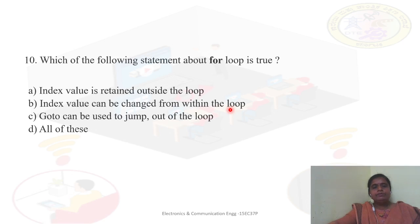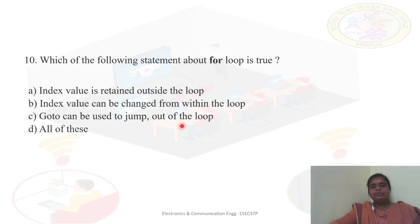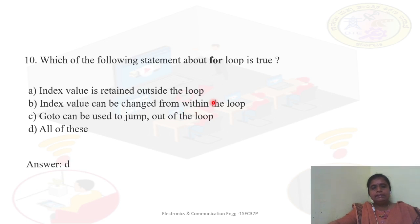Which of the following statements about for loops are true? The index value is retained outside the loop — yes, it can be declared outside. The index value can be changed from within the loop — yes. A goto statement can be used to jump out of the loop. All statements are true, so the answer is D.